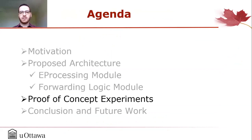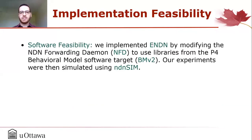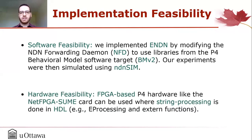To better show the functionalities of eNDN, we implemented a proof of concept and ran some experiments. Our proof of concept validated the software feasibility of implementing eNDN. Our implementation is based on NFD, modified to use libraries from the P4 software switch BMV2 to implement the P4 function targets. Our experiments were simulated using the eNDN environment. We also examined the hardware feasibility and found that FPGA-based P4 hardware, like the NetFPGA SmartNIC, can be used, where all parts of the pipeline involving heavy string processing are done in HDL.